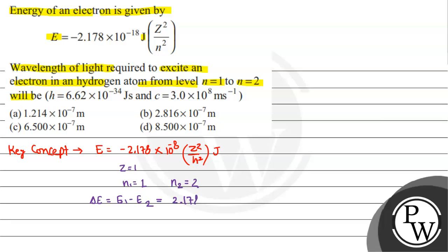2.178 × 10^-18 × (1/n1² - 1/n2²). And this value equals hc/λ. So when you find lambda from here,